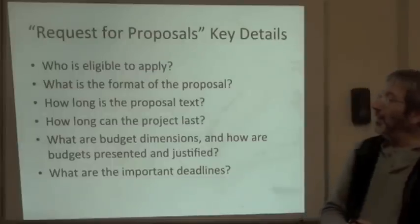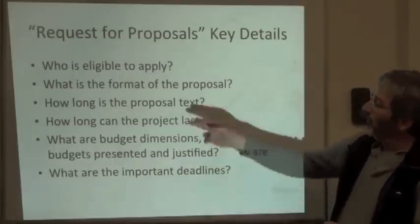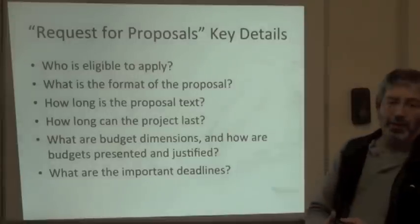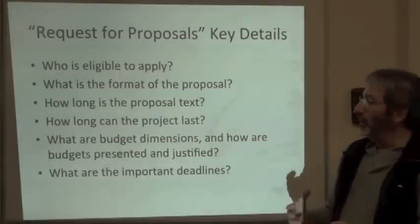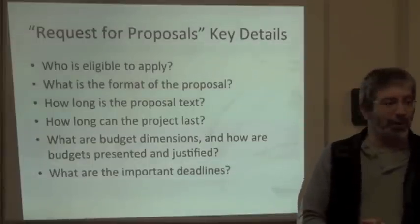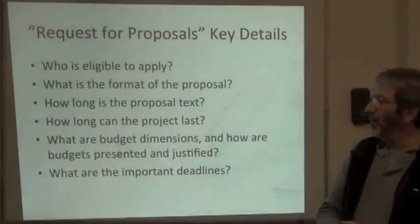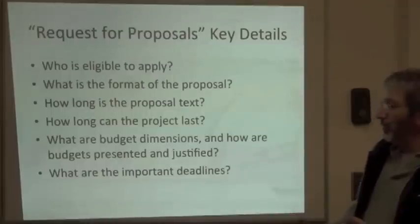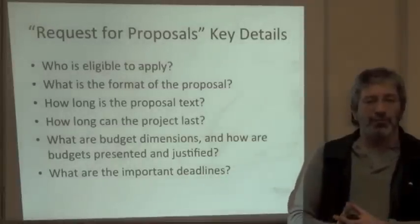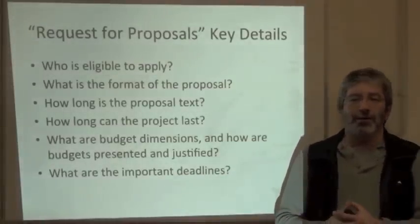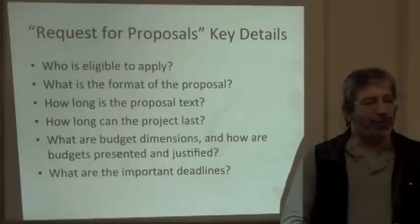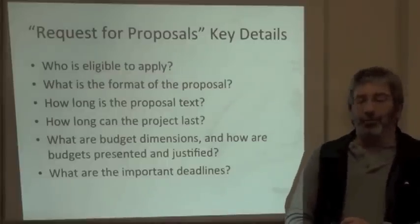Here is a list of key details to look for in the request for proposals: Who is eligible to apply? What format should the proposal take? How long is the text — is it pages or words, and what's the limit? What is the duration of the project — is it one year or can it go five years? What are the budget dimensions — which elements can be included, such as studentships, salaries, or equipment? And perhaps most important: what are the deadlines — when do you have to turn in your proposal?